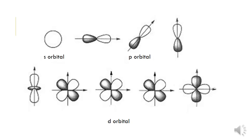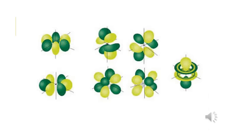Here are the different shapes for the orbitals. The s orbital is the sphere shape. The three p orbitals are oriented differently — one along the x-axis, one along the y-axis, and one along the z-axis — each holding two electrons. The d orbital has five different shapes along different axes. The f orbital has seven different shapes along different axes and can hold up to 14 electrons.